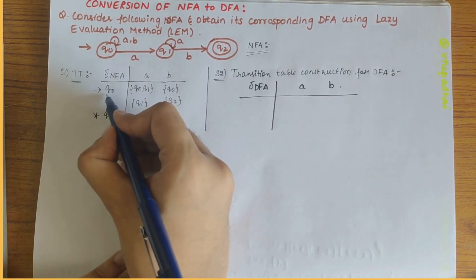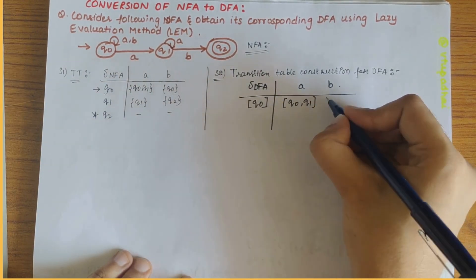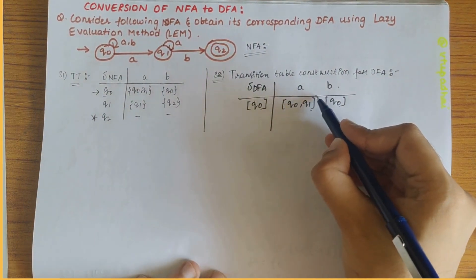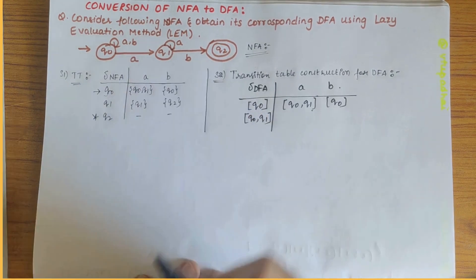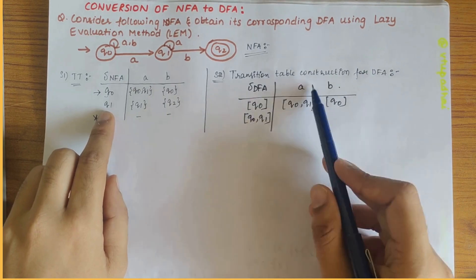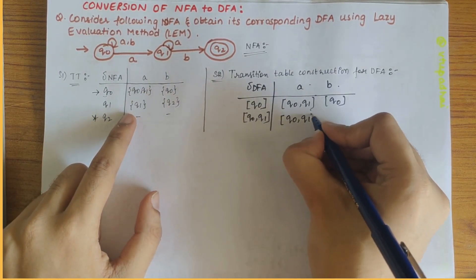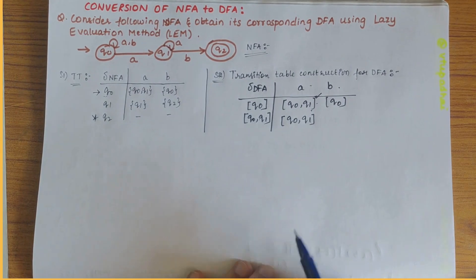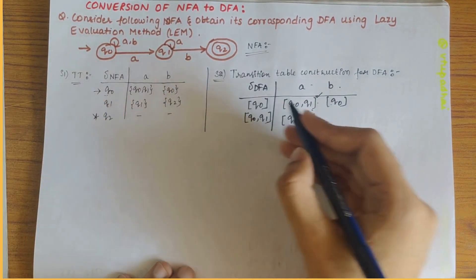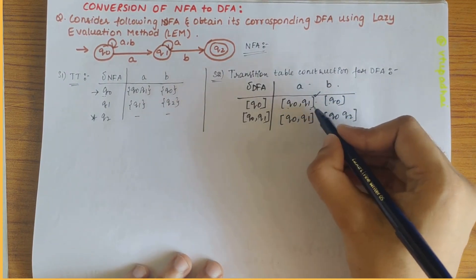The first state we include is the start state q0, written in square brackets. For q0 on a: q0 on a gives {q0, q1}, and q1 on a gives q1, so the union gives {q0, q1} — this state is now defined. For q0 on b: q0 on b gives q0 and q1 on b gives q2, so we get {q0, q2}.